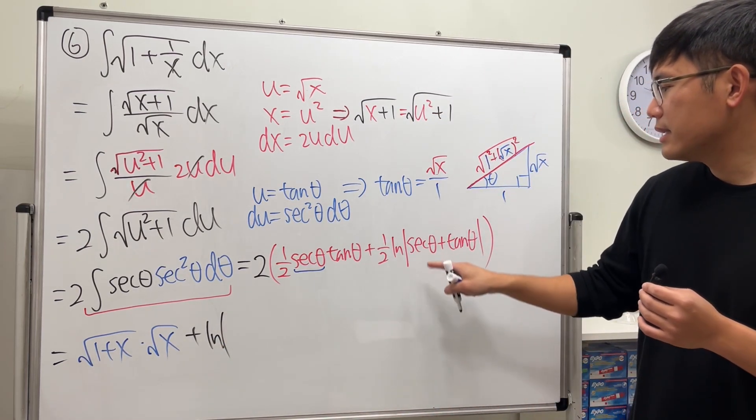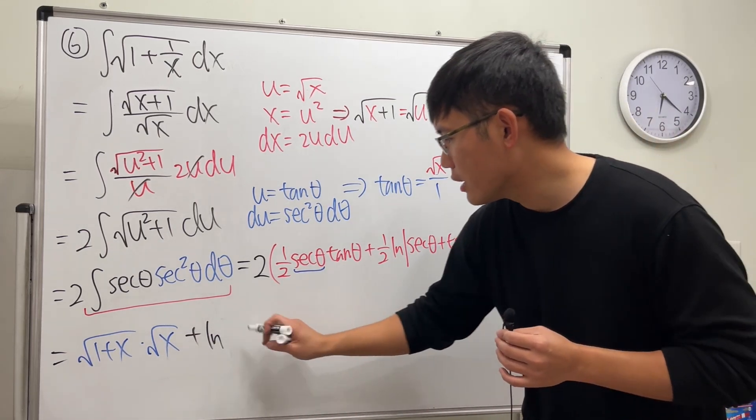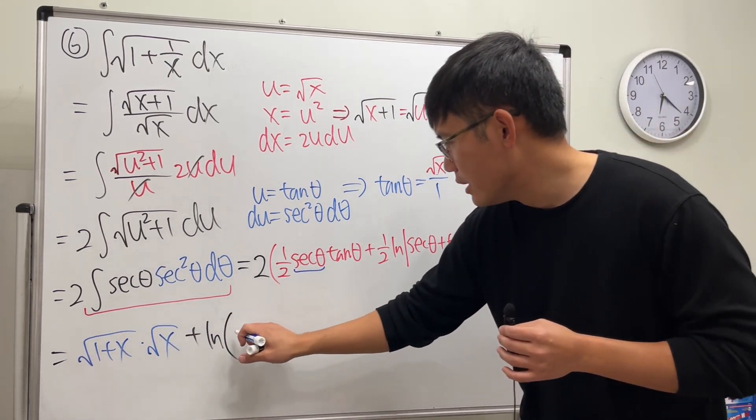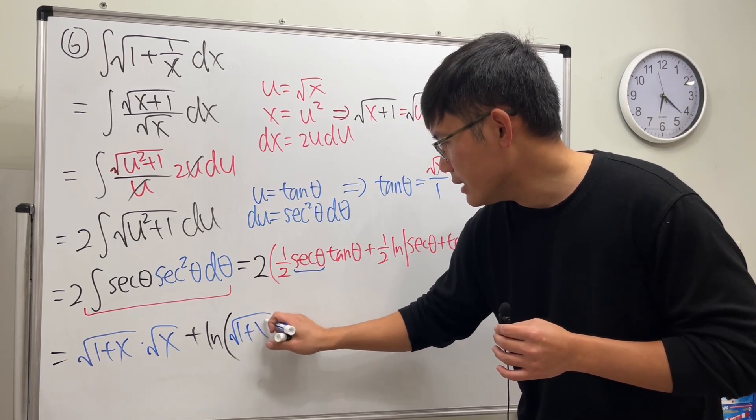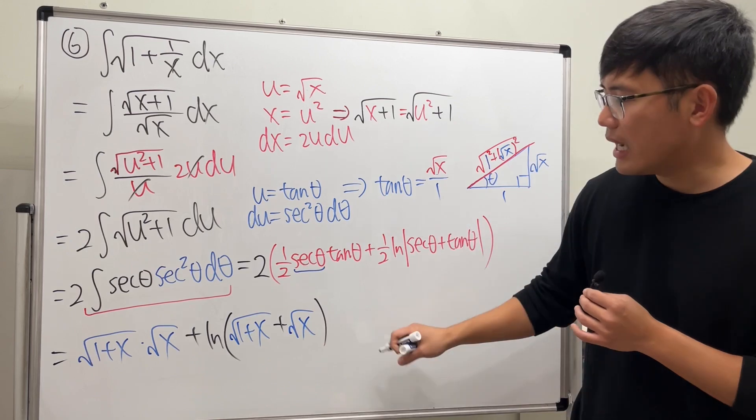But you know what? This and that will have square root, so we don't need the absolute value. Parentheses is okay. So we have square root of 1 plus x plus square root of x. And with that, we are done.